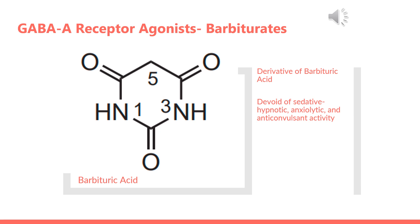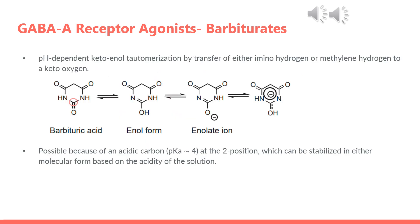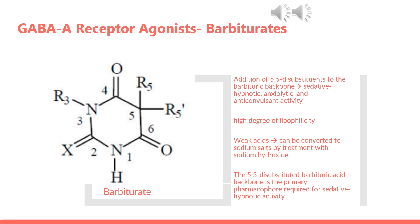Barbiturates are derivatives of barbituric acid, which itself is devoid of any sedative-hypnotic, anxiolytic, or anticonvulsant activity. Barbituric acid can undergo pH-dependent keto-enol tautomerization through a transfer of either an amino hydrogen or a methylene hydrogen to a keto-oxygen. This is made possible because of a fairly acidic carbon with a pKa of around 4 at position 2, circled in red, which can be stabilized in either molecular form based on the acidity of the solution. The addition of 5,5-di-substituents to the barbituric backbone yields compounds with potent sedative-hypnotic, anxiolytic, and anticonvulsant activity, and represents the primary pharmacophore required for sedative-hypnotic activity.